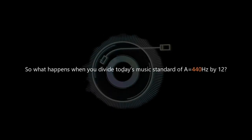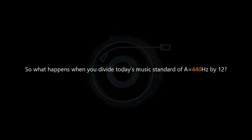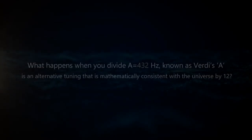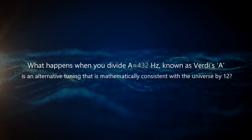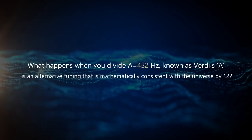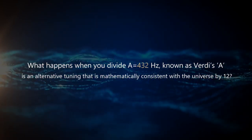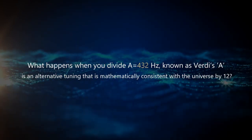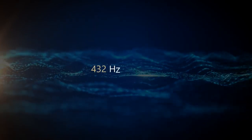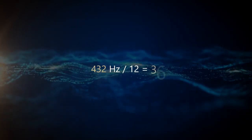So what happens when you divide today's music standard of 440 Hertz by 12? 440 Hertz divided by 12 equals 36.6666666667. So what happens when you divide 432 Hertz, known as Verdi's A, an alternative tuning that is mathematically consistent with the universe, by 12?